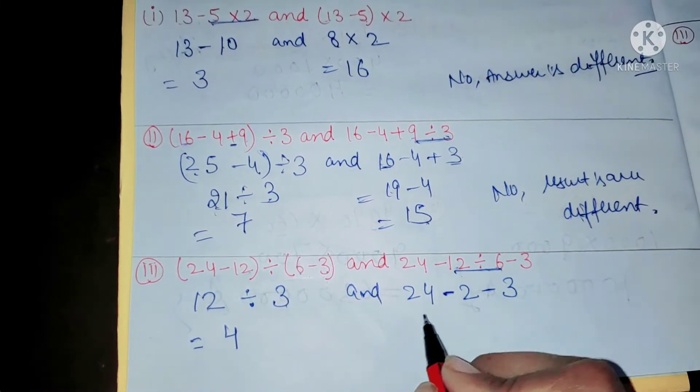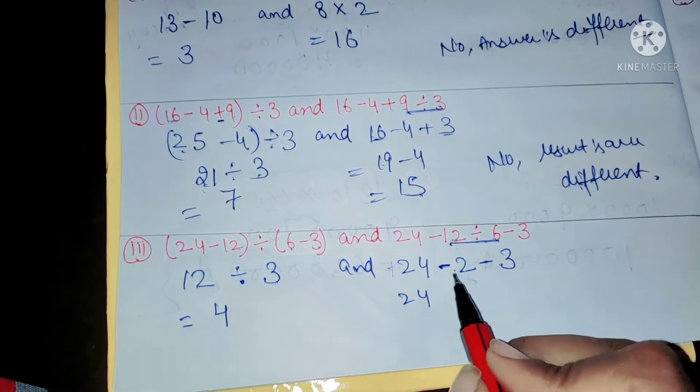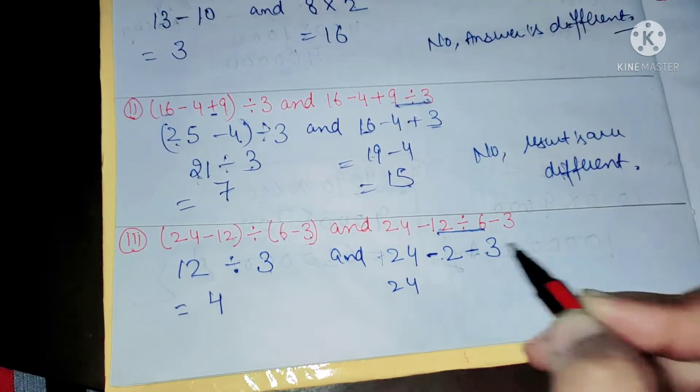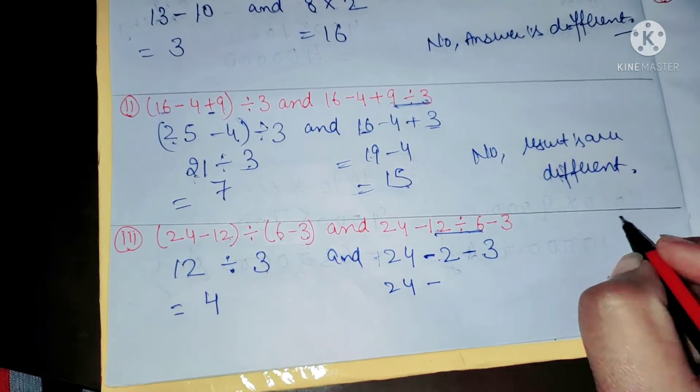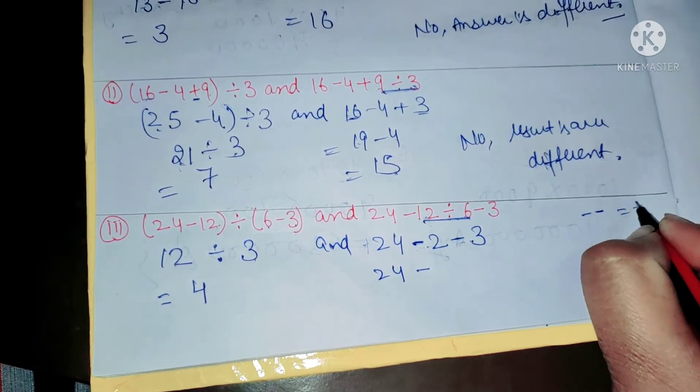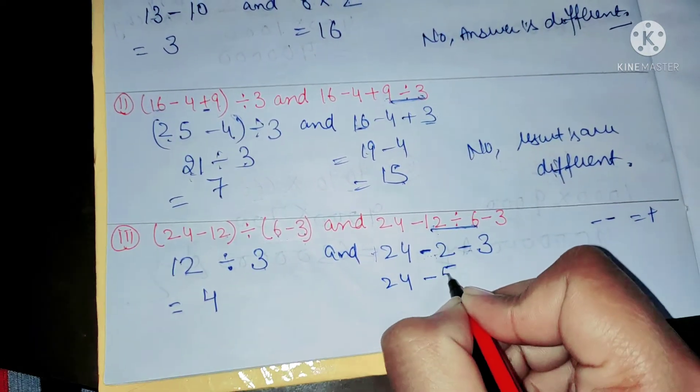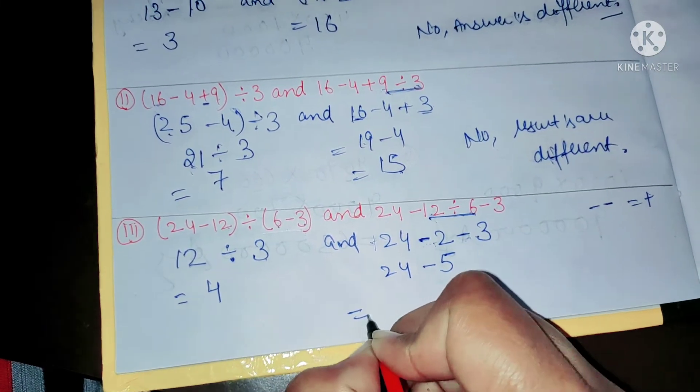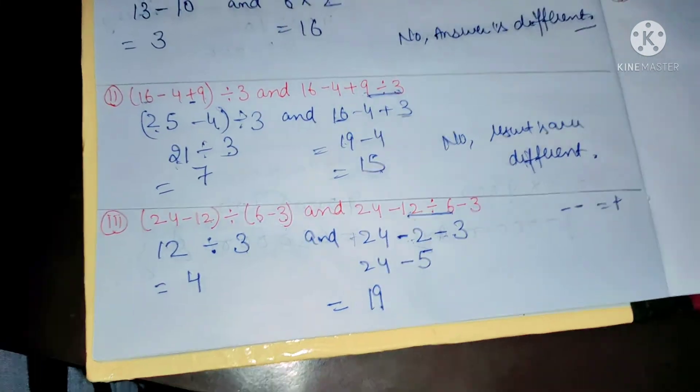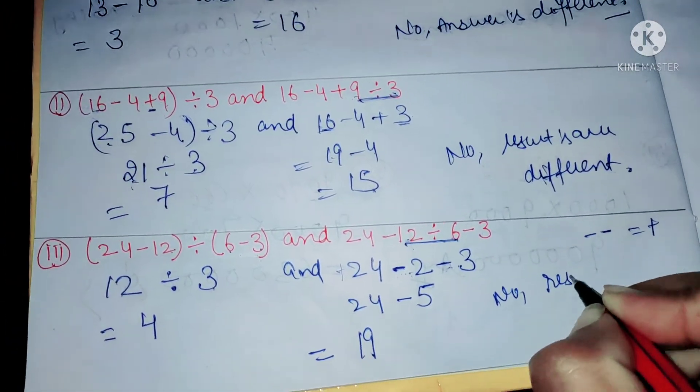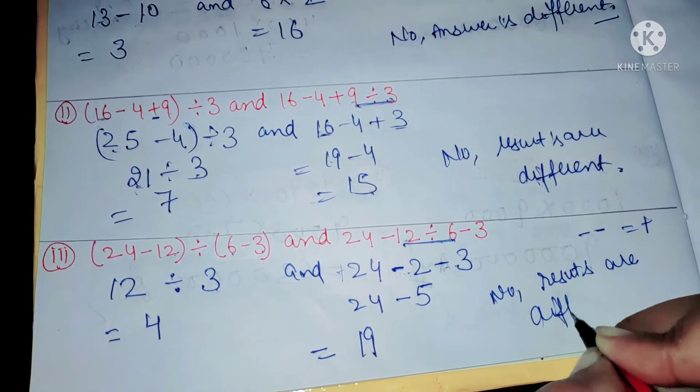Next, this addition. This is minus, minus, minus, plus. The sign minus, minus becomes plus. But sign minus... 24 minus 5 equals 19. Here the answer is 4, here 19. So again, no, results are different.